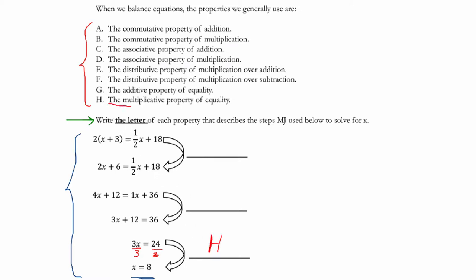H says the multiplicative property of equality. That property says if we're multiplying each side by a number, in this case we're dividing by 3, which is really the same as multiplying by 1 third. For example, if you have 9 times 1 third, that's 3, and that's the same as 9 divided by 3. These are the same thing. So here we're really multiplying each side by 1 third, and that's the multiplicative property of equality.